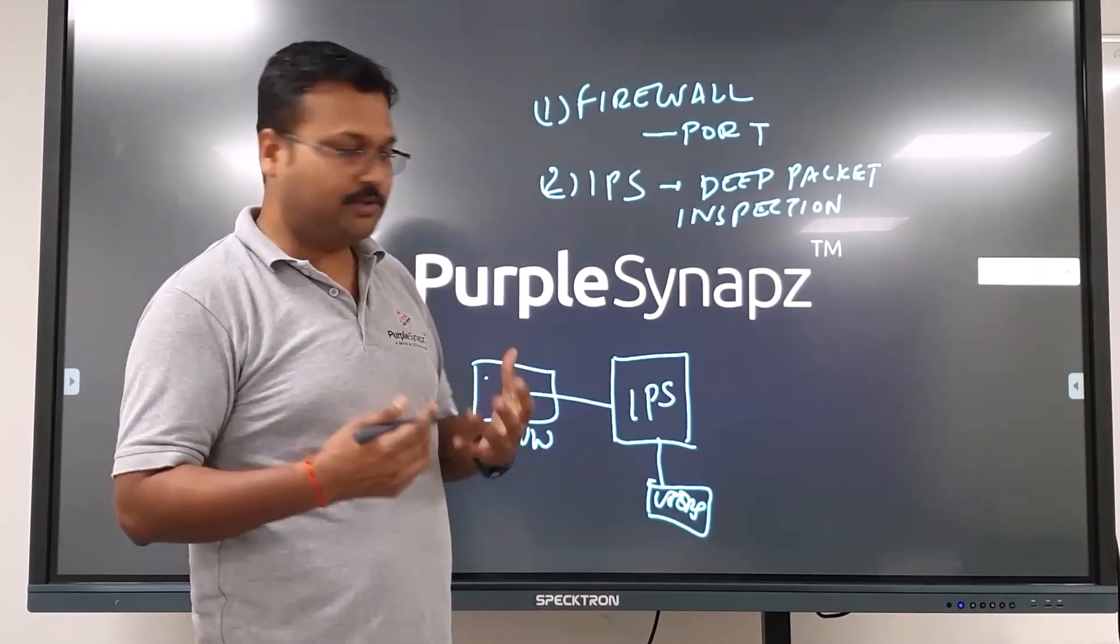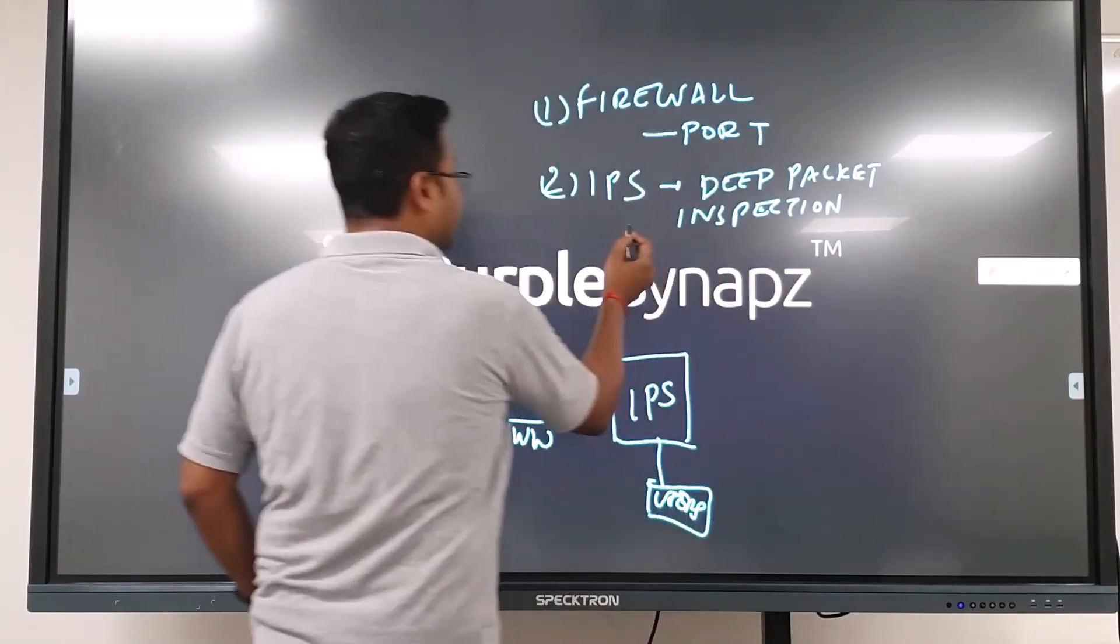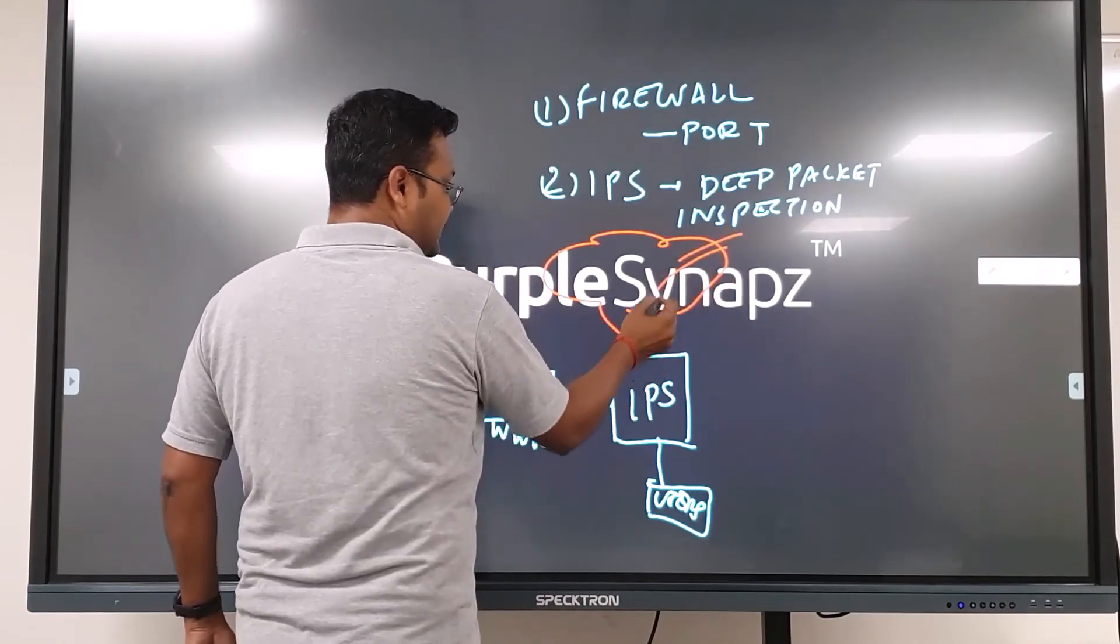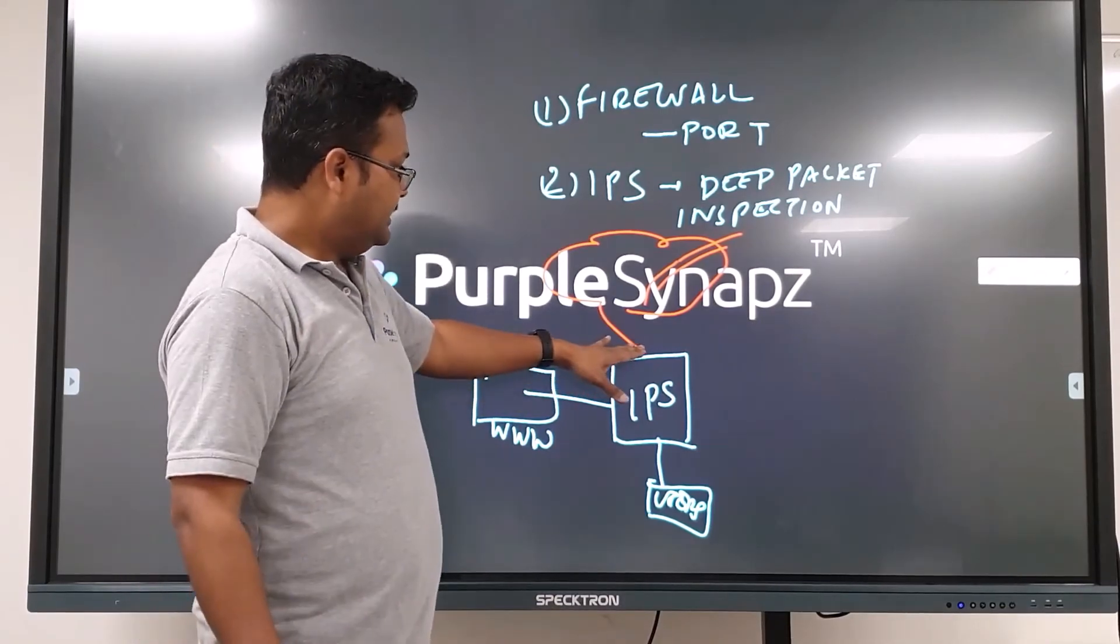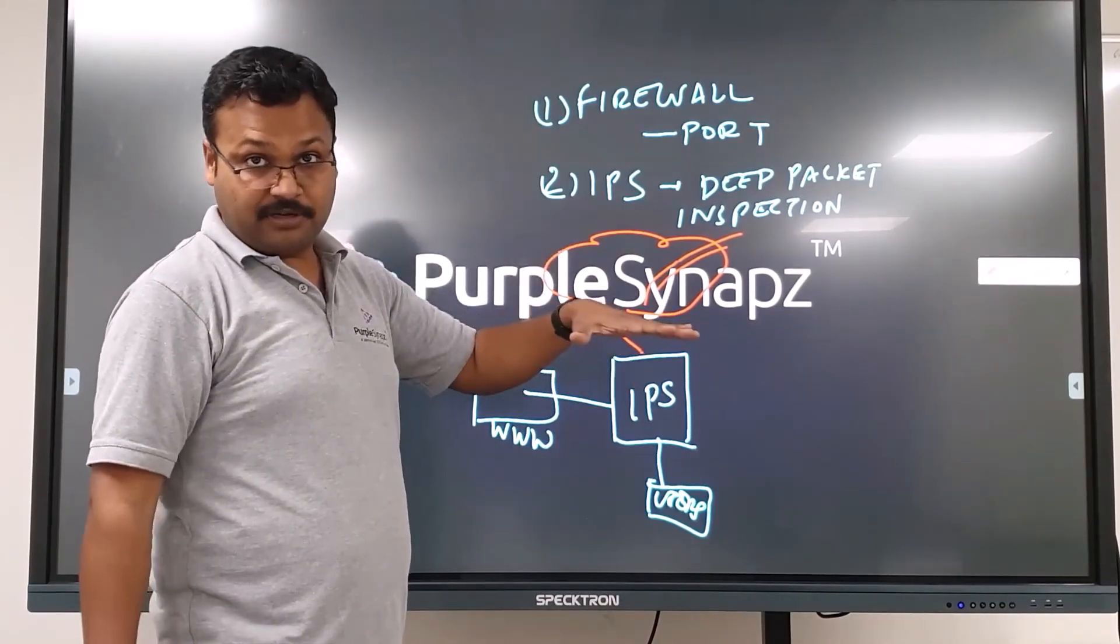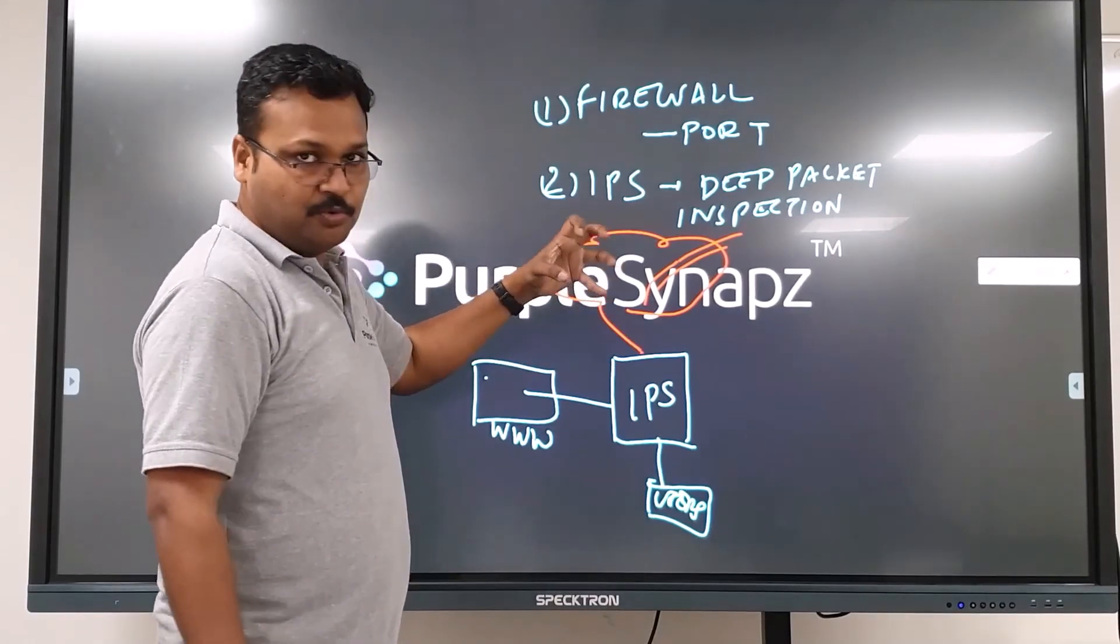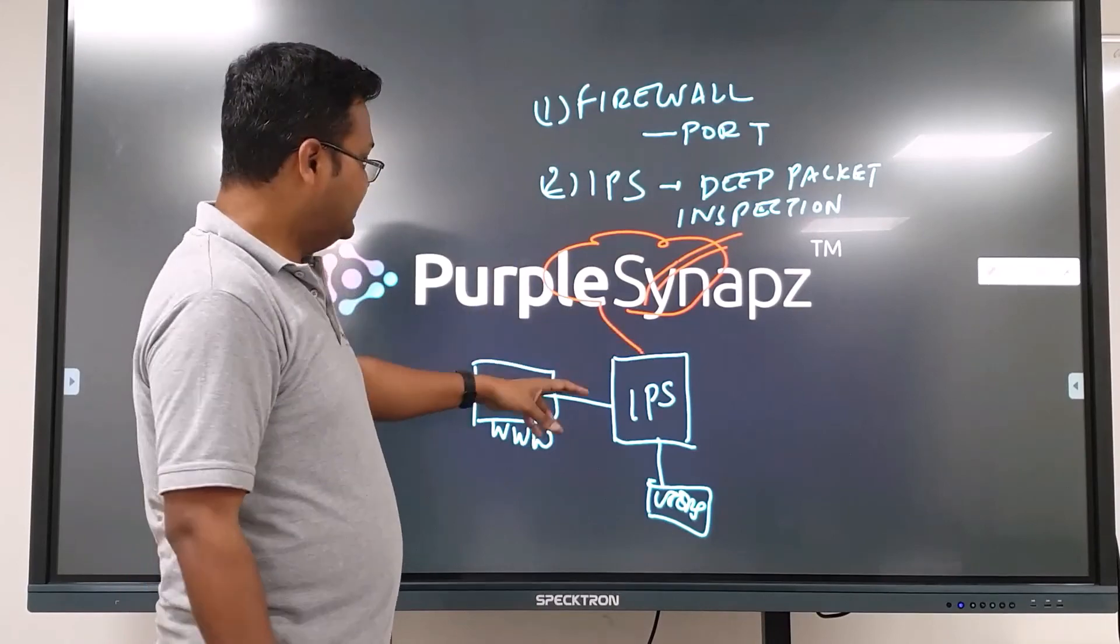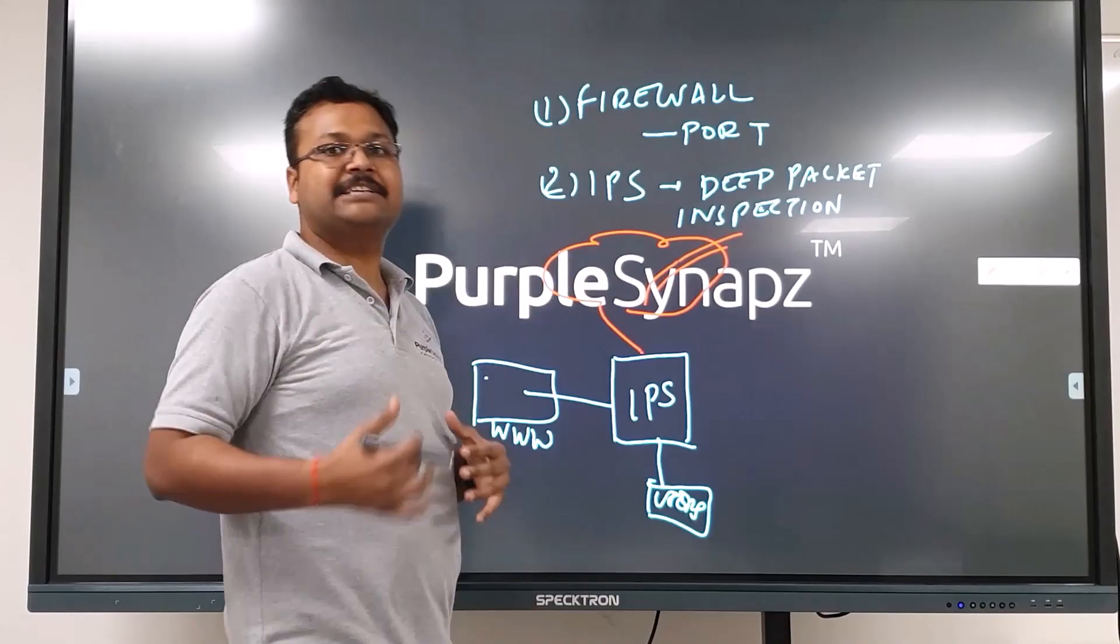If any hacker is trying to access from outside and tries to reach your server, the firewall will first protect at the port level. But if they're trying to send malicious traffic inside the allowed traffic, IPS is going to protect you.